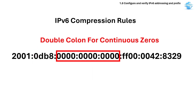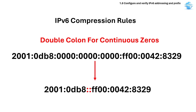There can also be many zeros across many groups of an IPv6 address. IPv6 has a double colon shortening mechanism — we can use double colon to shorten continuous zeros in an address. The important point is that we can use the double colon only once in an IPv6 address.